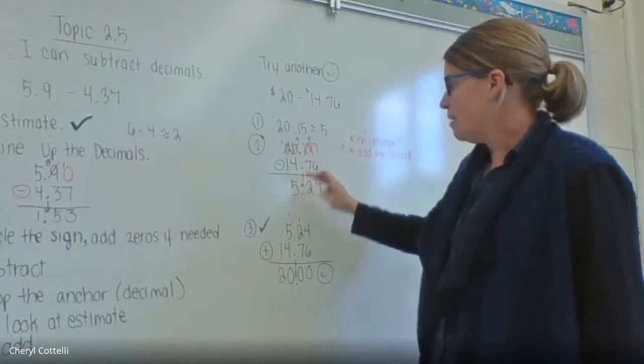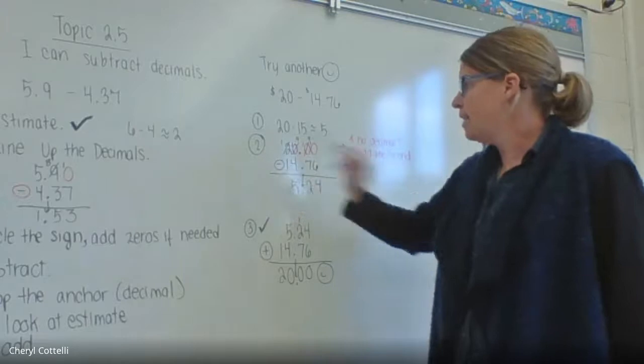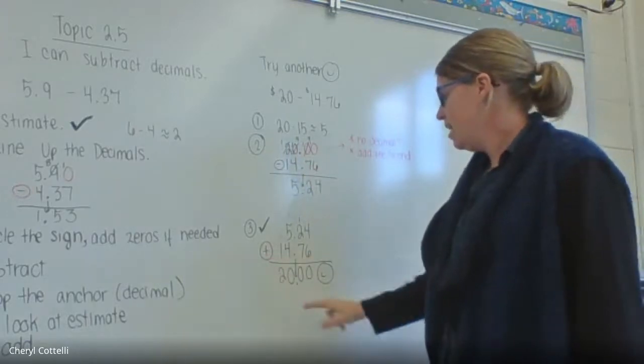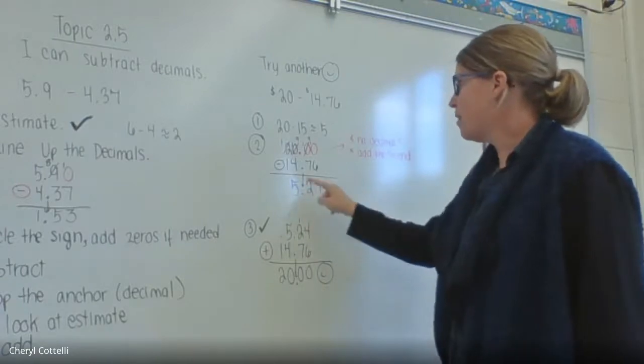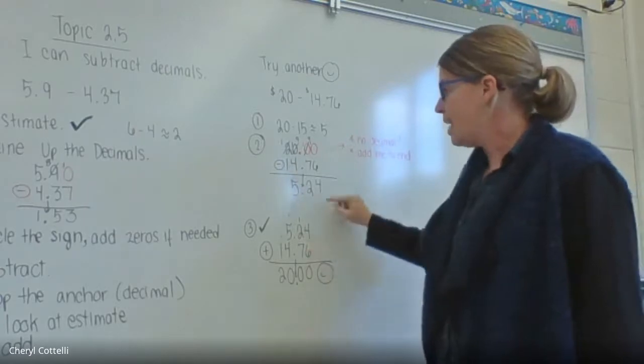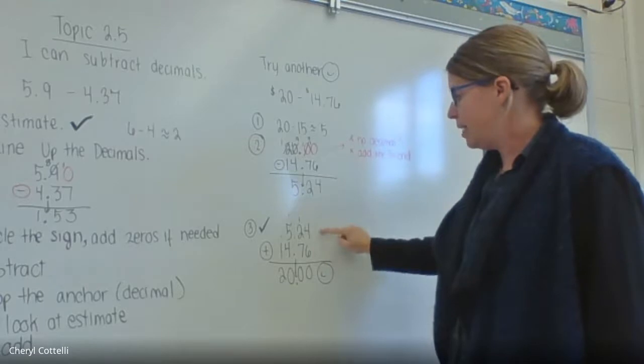Ten minus 6 is 4, 9 minus 7 is 2, 9 minus 4 is 5. And then the next step, we circle the sign, is to drop the anchor. We can check it. We got an answer of 5.24, which is close to our estimate of 5. Or I can add 5.24 and 14.76 and I should get twenty dollars, which I did.